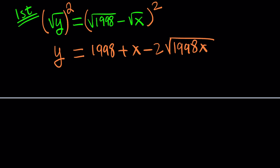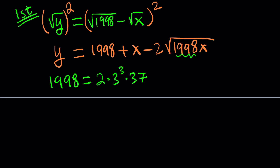Here's the thing you need to be paying attention to: this number, 1998. We're going to factor it. It's 2 times 3 to the third power times 37. By the way, one thing to keep in mind is 3 times 37 is 111, so this number is divisible in useful ways.